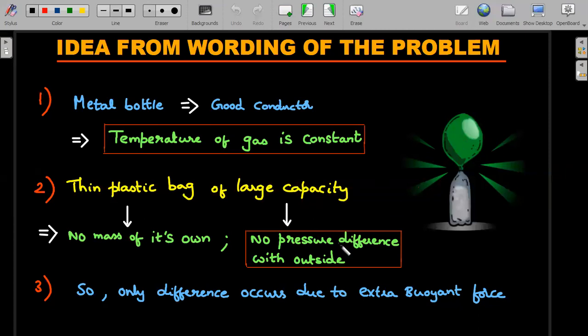Because of the large capacity mentioned in this problem, the pressure difference outside and inside will become equal to, or pressure difference should be equal to zero. So these are the two important things: the temperature of the gas remains constant, and the gas expands in such a way that the outside pressure and inside pressure becomes equal to each other.